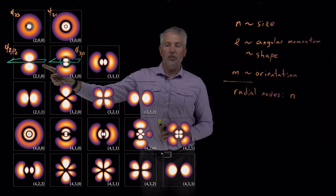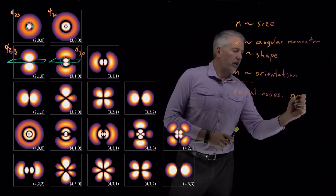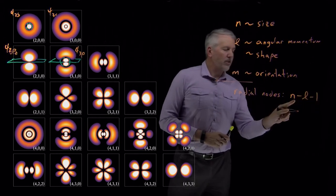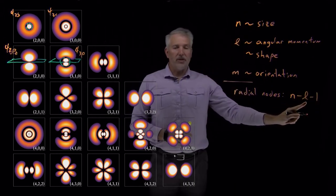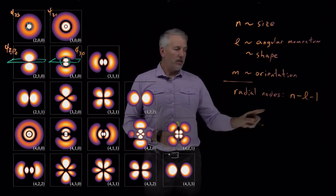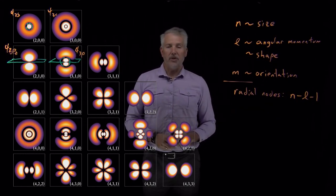For a 2p orbital, we only have an angular node and not a radial node. So it turns out that the number of radial nodes increases when n increases, but it decreases when l increases. So the number of radial nodes is n minus l minus 1.